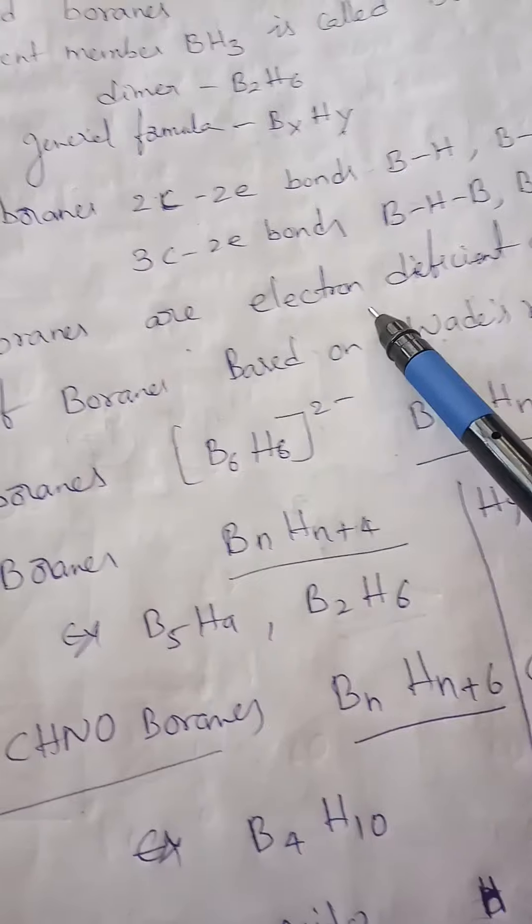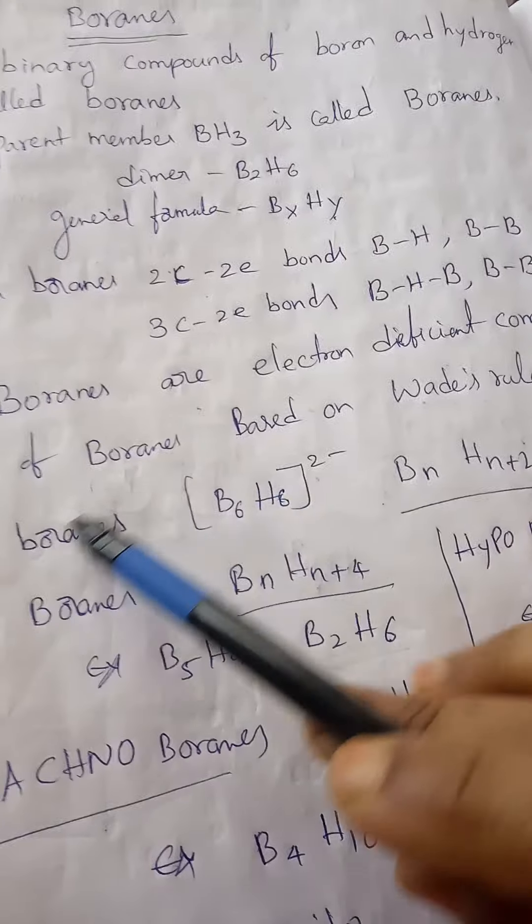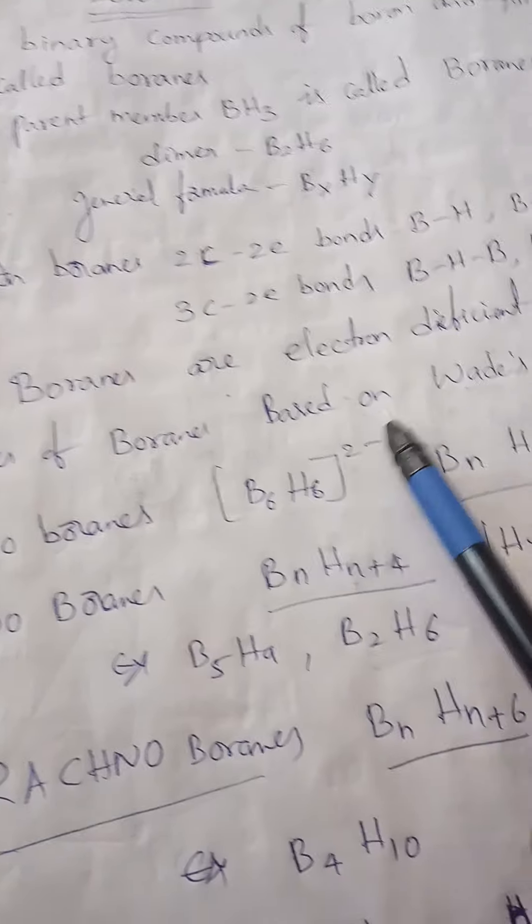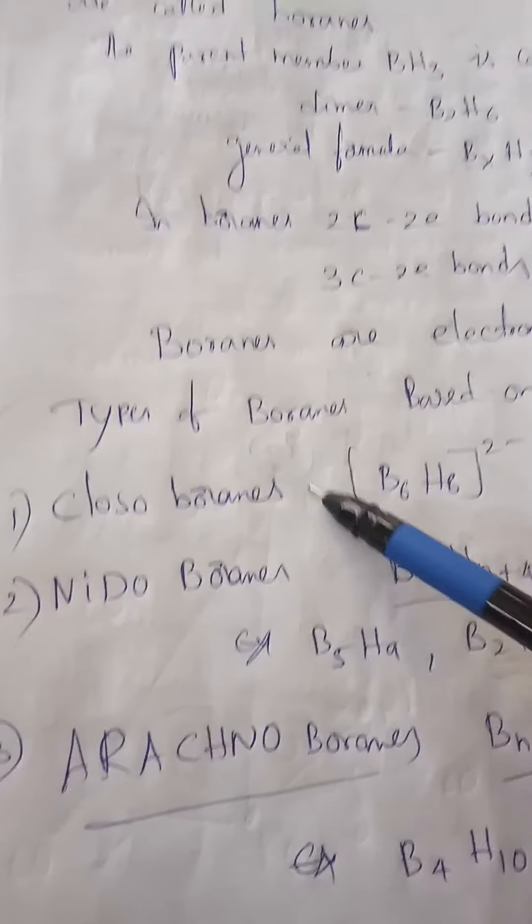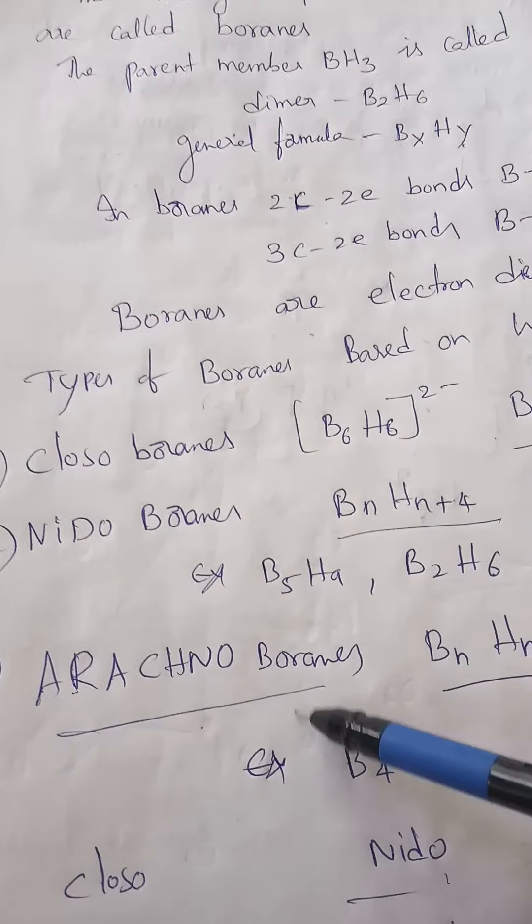Three-center two-electron bonds are banana bonds, which are generally called BHB bonds or BBB bonds. Boranes are electron deficient compounds. Types of boranes are based on Wade's rules: closo-boranes, nido-boranes, and arachno-boranes.